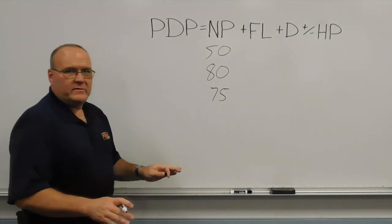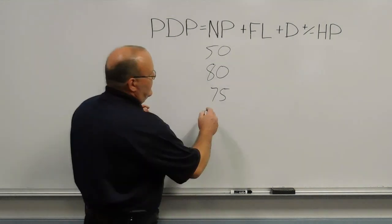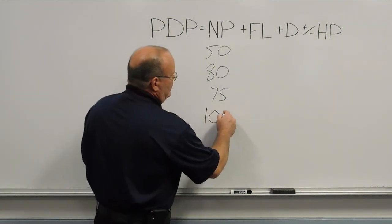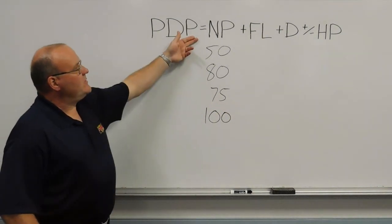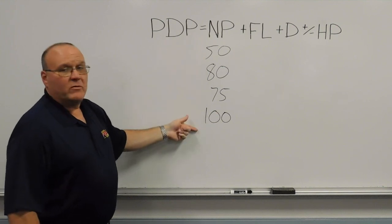And any other fog nozzle, automatic nozzle, whether it's a hand line or a master stream, we would flow at 100 pounds. So nozzle pressure for an attack engine, one of those four numbers, 50, 80, 75, or 100.